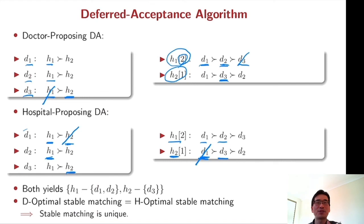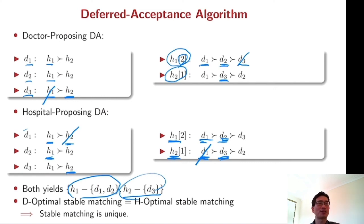Interestingly, both yield the same matching H1 hires D1 and D2 and H2 hires D3. So that means doctor optimal stable matching is equivalent to hospital optimal stable matching. And that's the unique stable matching. So this is the quiz. So please find a stable matching and also try to think about how many stable matchings are in this problem.